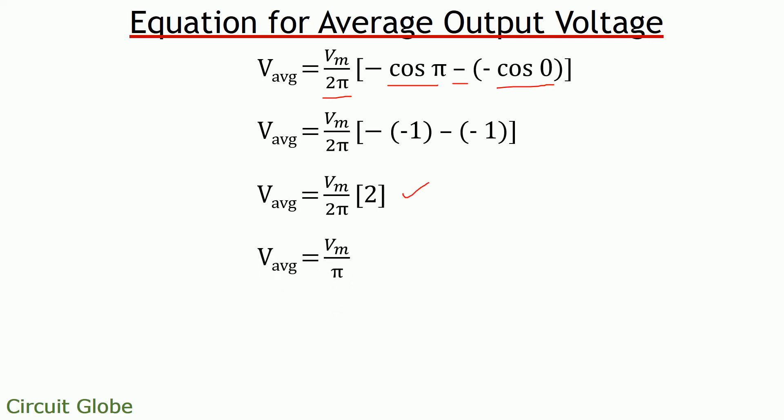And further we get V average is equals to Vm upon pi. We know the value of pi is 3.14. And substituting this value also finally we get V average as 0.318 Vm.